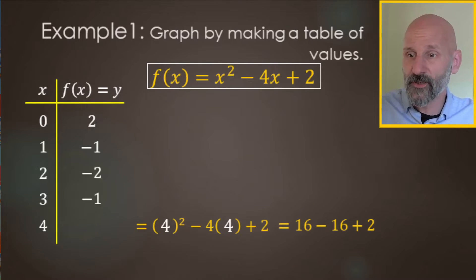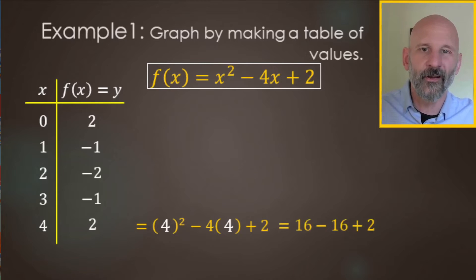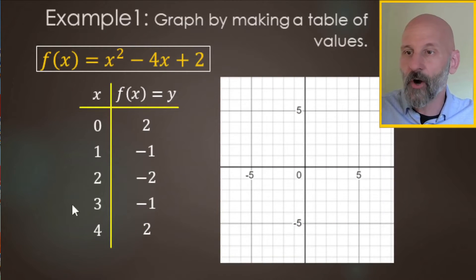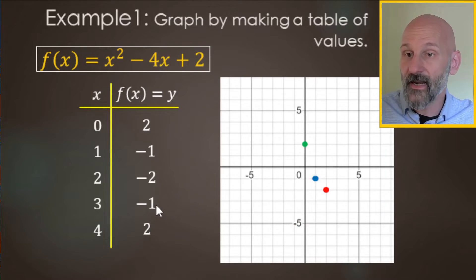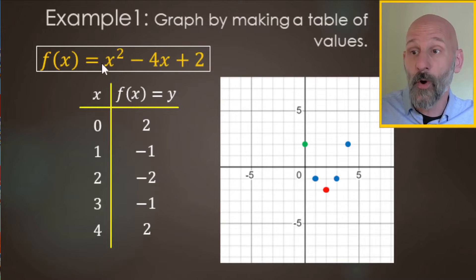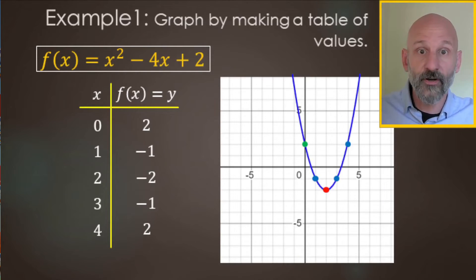If you have a calculator, you can use Desmos as a shortcut, entering each x value. Now with our table of values ready, we plot the points. (0, 2) goes here; (1, -1) goes here; (2, -2) goes here; (3, -1) here; and (4, 2) here. This is a parabola — a U shape — so we draw that curve connecting the points.